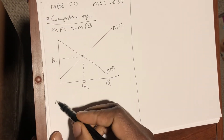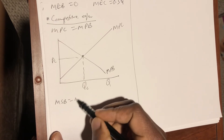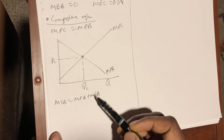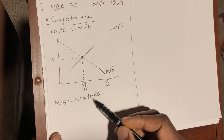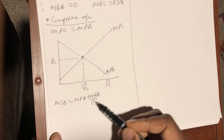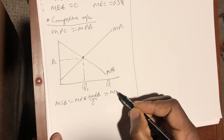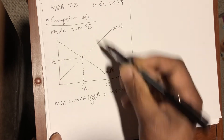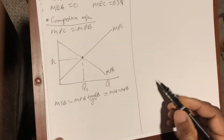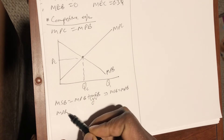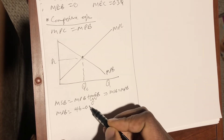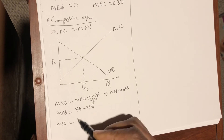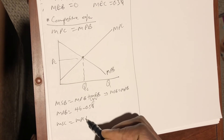Recall that MSB = MPB + MEB. Since MEB = 0, this implies MSB = MPB. Therefore, Marginal Private Benefit is equal to 46 − 0.5Q.